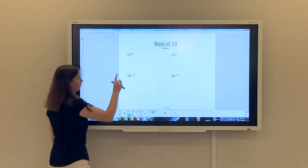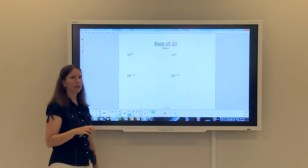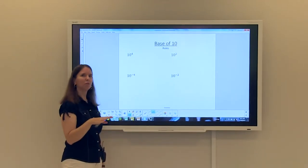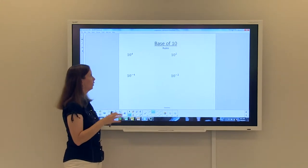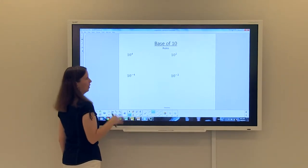So let's start with the first two examples, the 10 to the fourth and the 10 to the second. A really cool thing about bases of 10 is that they will always turn into answers or numbers that have a one in them and zeros in them. So if you know that, pretty simple.